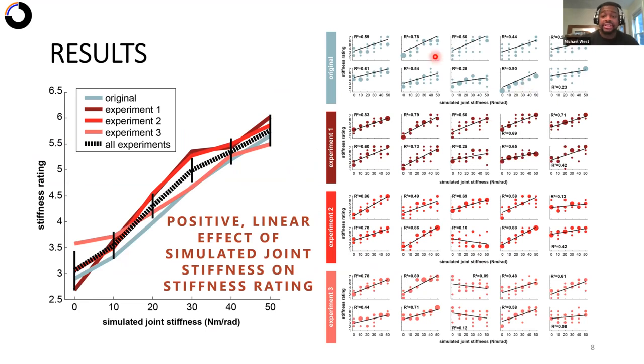What we see here is all the subject's individual data. And you can see the simulated joint stiffness and their chosen stiffness rating. And what we did was we fit a linear model to that, and we defined the goodness of fit of the linear model by the coefficient of determination. And we determined that we use that as a metric of subjects' performance. So a perfect linear relationship would be a high coefficient of determination, means subject did the task very well.